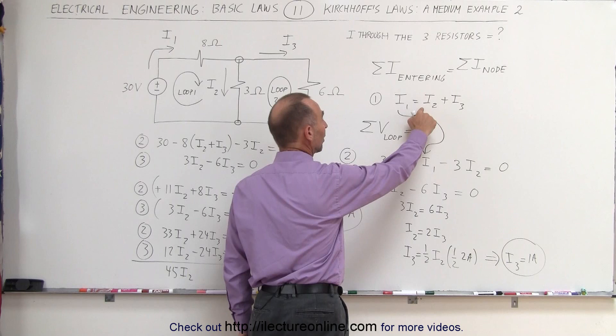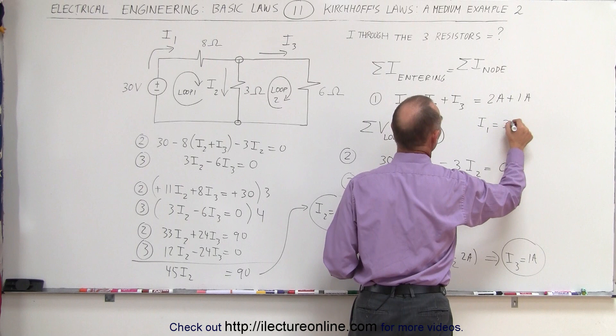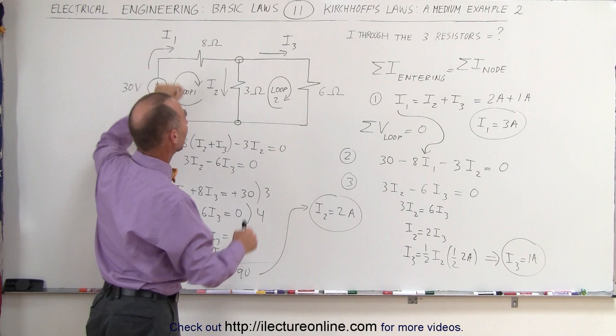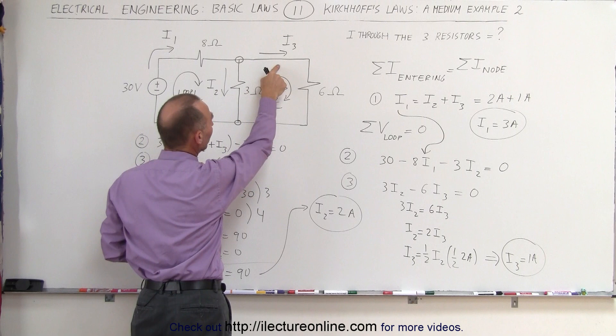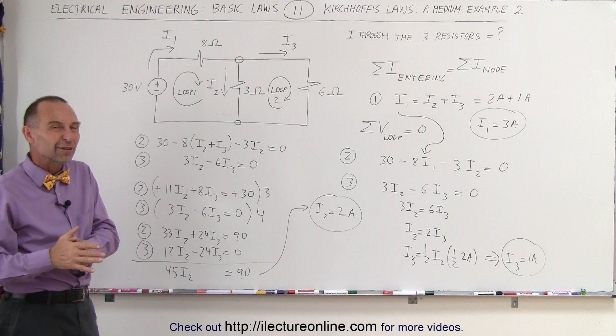Now we have both I2 and I3. Using the first equation, I1 equals I2 plus I3 equals 2A plus 1A, so I1 equals 3A. And that makes sense: if the current through this branch is I1 equal to 3A, and it splits into I2 equal to 2A and I3 equal to 1A, those do add up to 3A. That's how we use Kirchhoff's rules to come up with enough equations to solve for all the currents in the circuit.